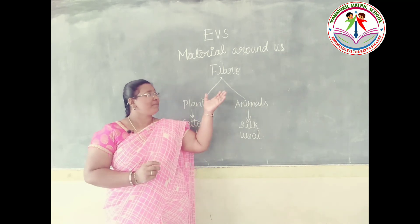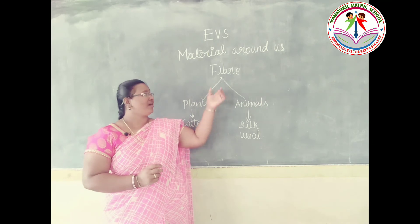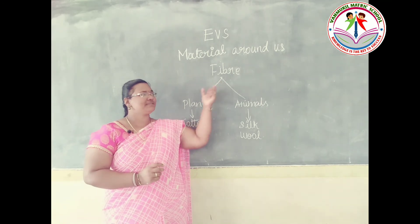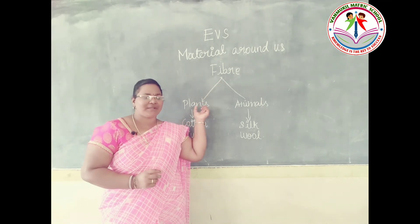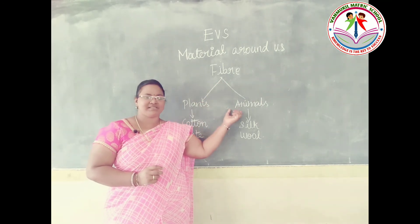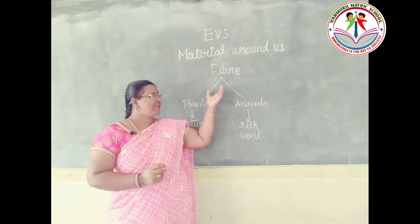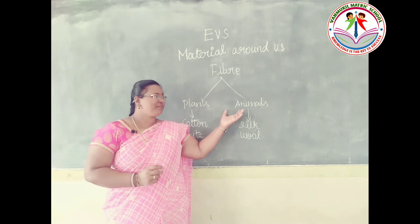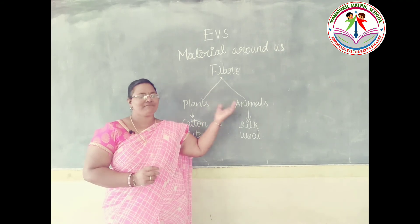Fiber is a material. Fiber is obtained from both plants and animals. Plants and animals are sources of fiber.